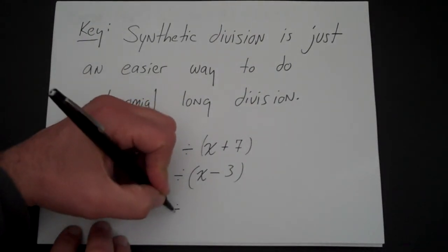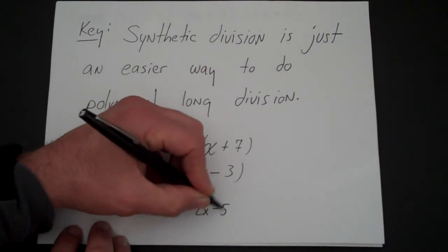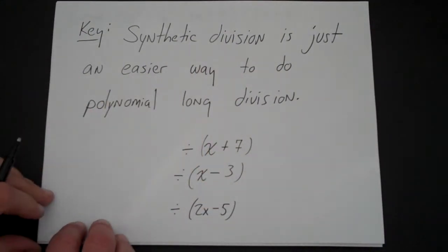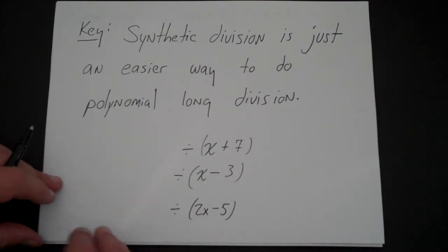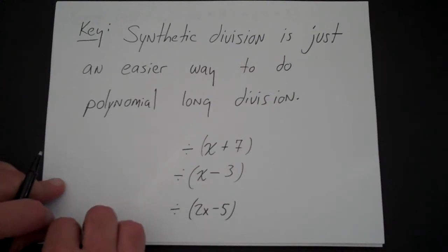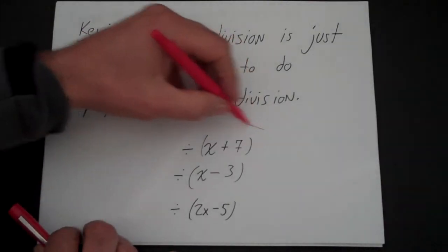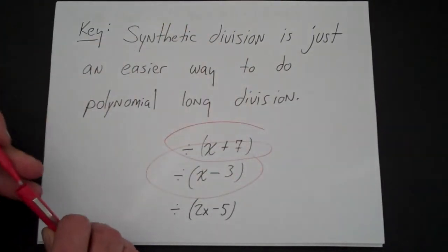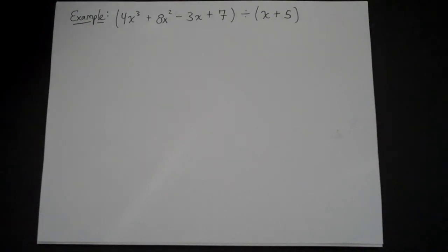If you're dividing by something like 2x minus 5, you could do synthetic division, but we're not going to do that in this class. When you're dividing by 2x minus 5 in this class, we're just going to use polynomial long division. So we're looking at problems dividing by x plus or minus a number. Let's look at an example.